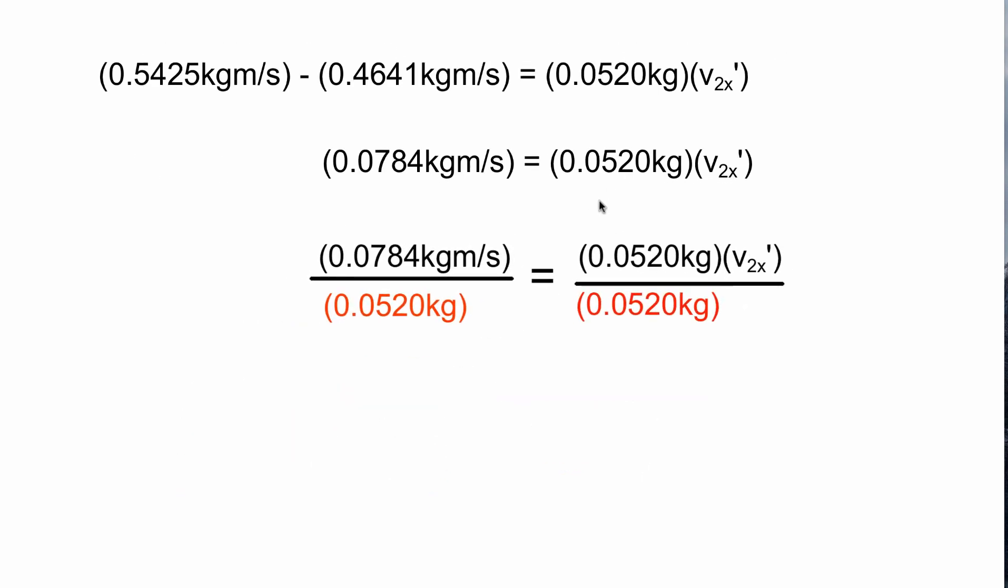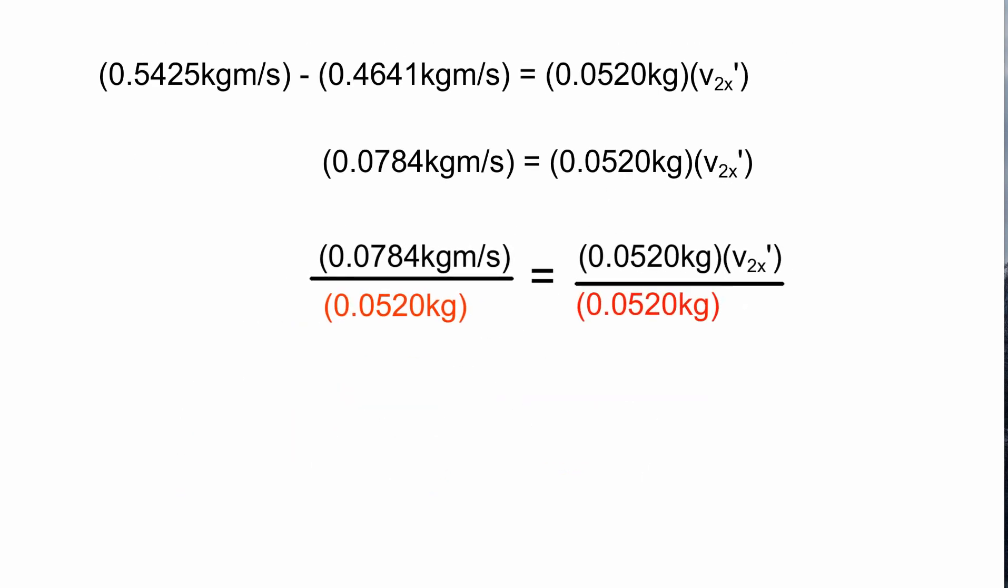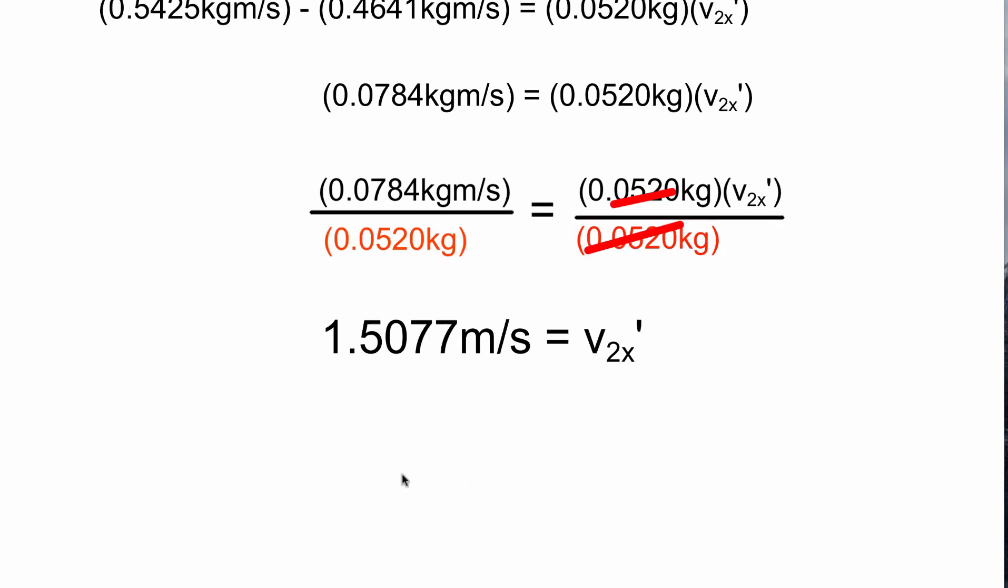Now let's divide both sides by 0.0520 kilograms. On the right hand side that goes away and now we're just left with 0.0784 kilogram meters per second divided by 0.0520 kilograms. The kilograms will cancel off and we'll be left with a velocity, which is 1.5077 meters per second. This is our final velocity of ball two in the x direction.